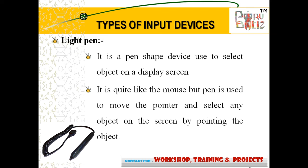Let's discuss about the light pen. It is a pencil-shaped device used to select objects on a display screen. It works like the mouse, but the pen is used to move the pointer and select any object on the screen.